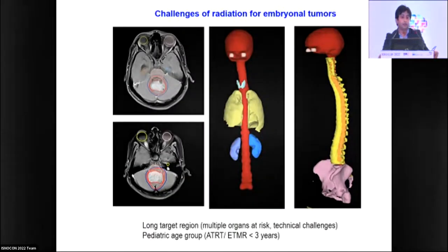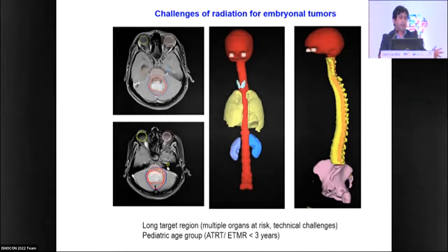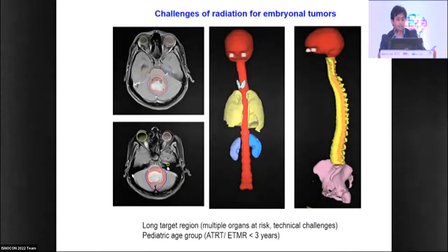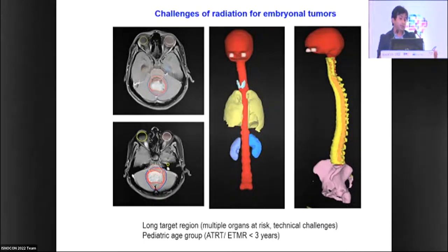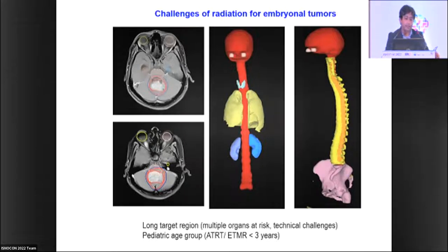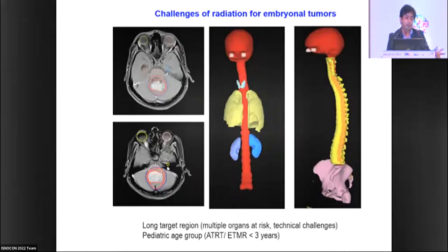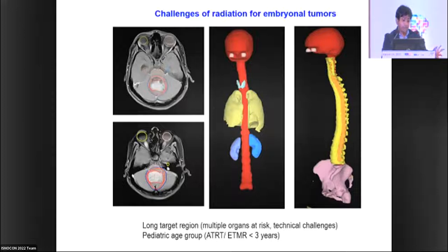When treating embryonal tumors, we must treat the entire craniospinal axis and deliver higher dose to the tumor bed. This is possibly the longest axis and largest volume of radiation we deal with. At the same time we must spare critical structures — the vertebral bodies, lungs, thyroid, kidneys, cochlea — while delivering higher dose to the posterior fossa tumor bed. The spectrum of toxicities can be very different, requiring careful balancing.